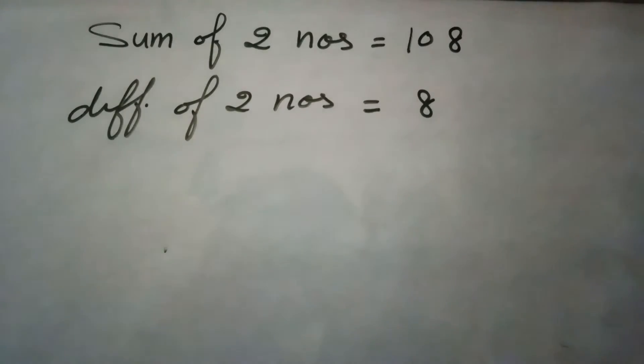In this question it is given that sum of two numbers is 108 and the difference of these two numbers is 8. We have to find these two numbers.